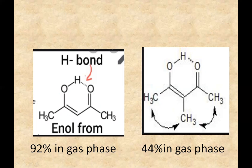So there are different factors which can affect the percentage of keto and enol form in tautomeric equilibria. We have studied these in detail: bond energy, hydrogen bonding, solvent effect, and steric effect.